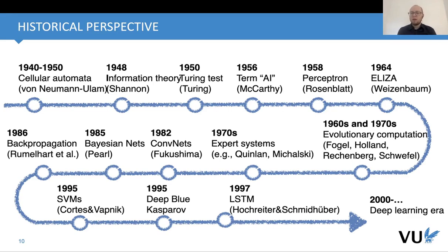Then we had other ideas in AI like evolutionary computing and expert systems. ELIZA was also a kind of first bot. In the 80s, something extremely fascinating was proposed called convolutional nets — originally called the neocognitron, proposed by Japanese scientist Fukushima around 1982. We can say that this was the first model that is nowadays used as almost a standard architecture for processing images.